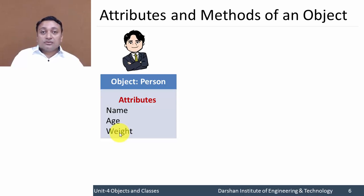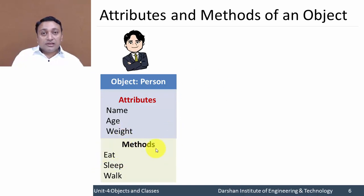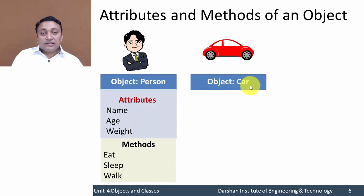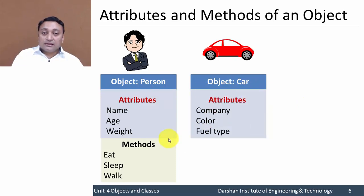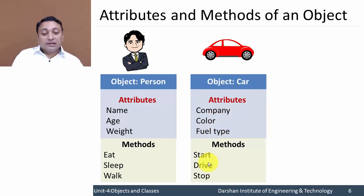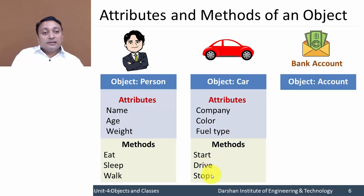We would also expect that the person should do something — a person can eat, sleep, and walk. These are called methods, or we can say operations performed by the object 'person'. Next, object 'car' — attributes of car would be company, color, and fuel type, and methods would be start car, drive car, and stop car.